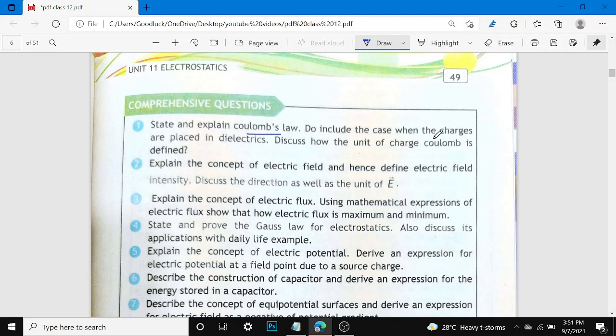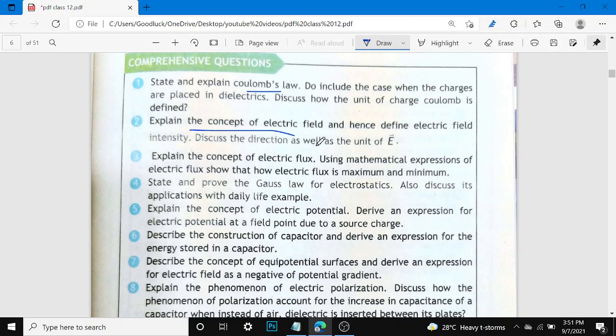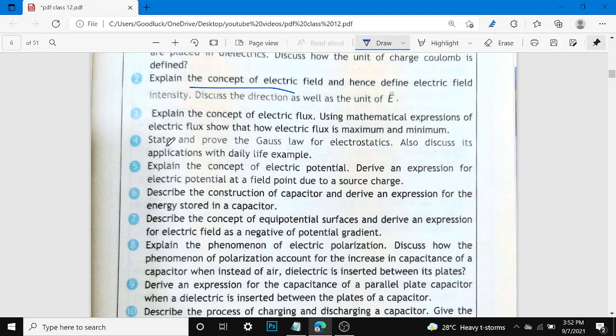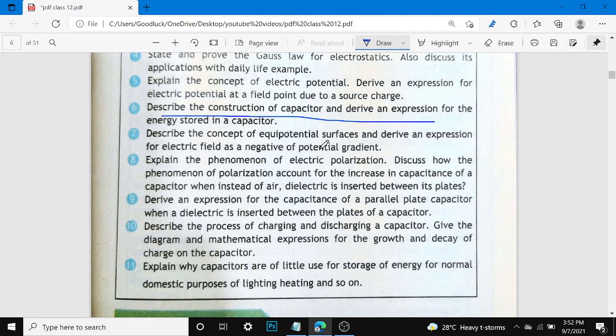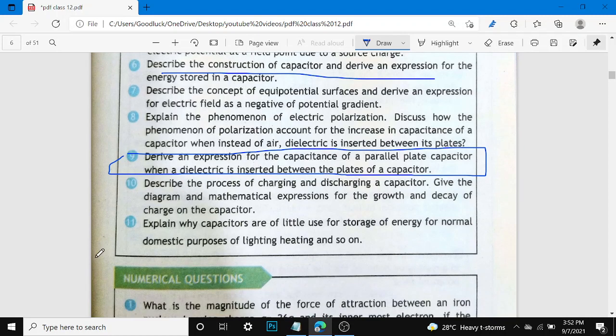Will the energy stored in three capacitors be greater when they are connected in series or parallel? Can different equipotential lines cross each other? Water has a large dielectric constant but it is rarely used in capacitors, why? How can you increase the capacitance of a capacitor? These are all questions from the previous book. Comprehensive questions: State and explain Coulomb's law. Include the case when the charges are placed in a dielectric. How is the unit of coulomb charge defined? Explain the concept of electric field and hence define electric field intensity. Explain the concept of electric flux, use mathematical expression. State and prove Gauss's law for electrostatics.